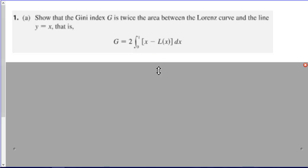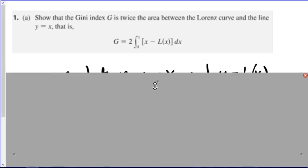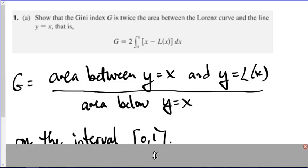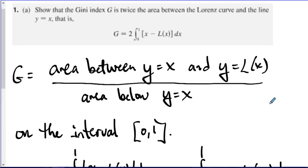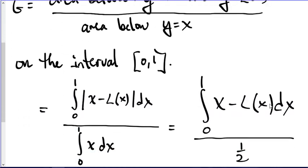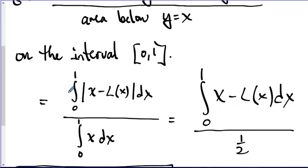So if we go back to our definition, what is the Gini index? By its definition, it's the area between the line Y equal X and the curve Y equal L of X, all divided by the area below that line Y equal X, specifically on the interval from 0 to 1.